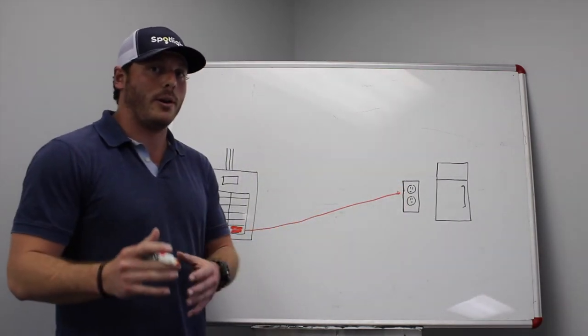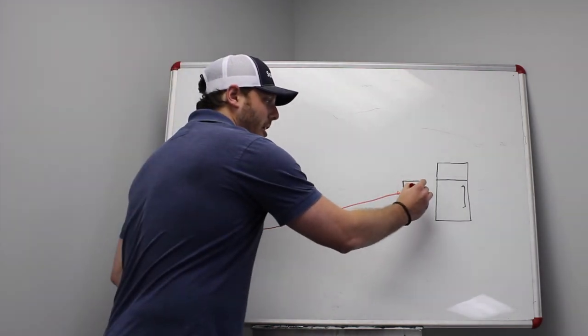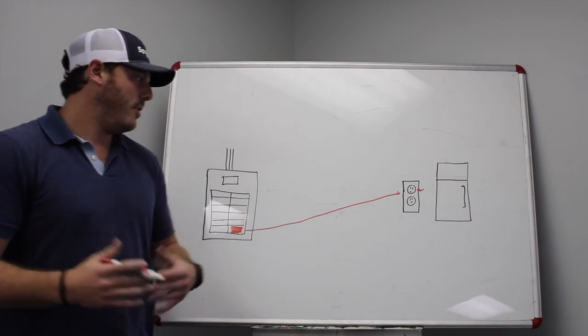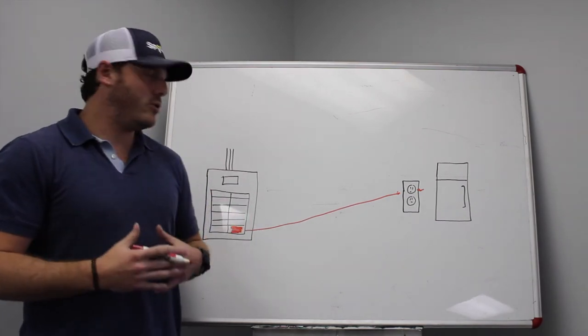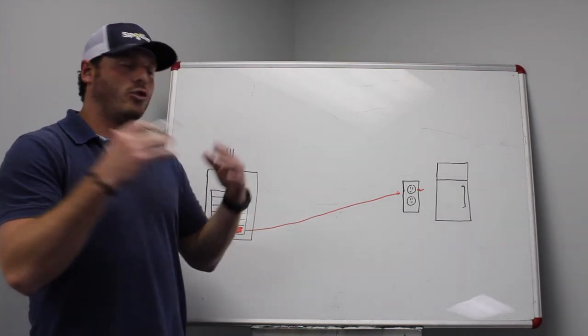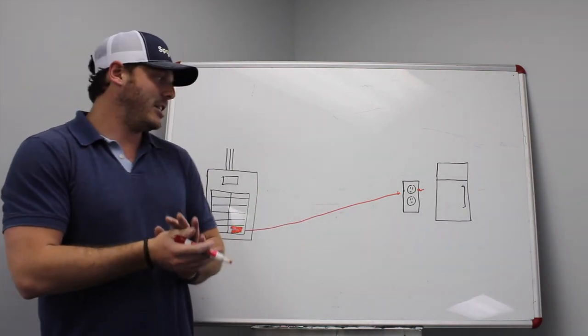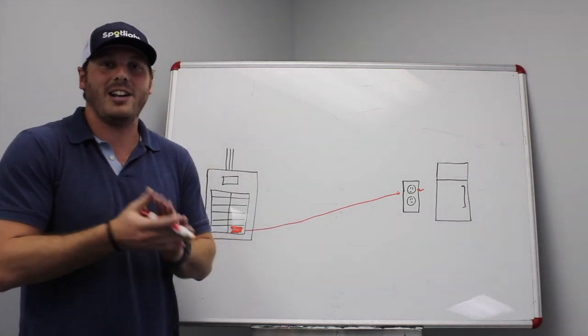You take that appliance, plug it right into its own circuit, and now it has its own safe situation for you to actually be able to utilize that appliance without tripping any breakers or overloading or maximizing your panel. So that's a basic simple explanation of what a dedicated circuit is.